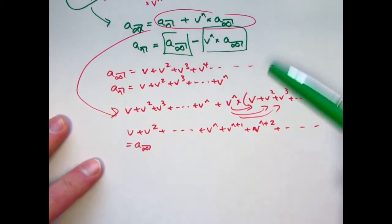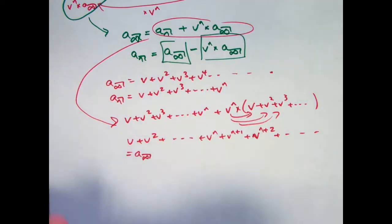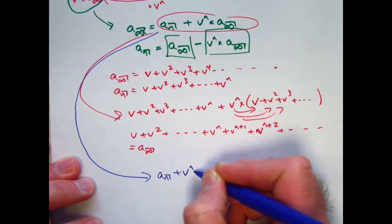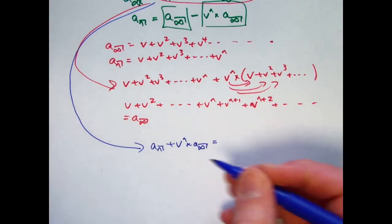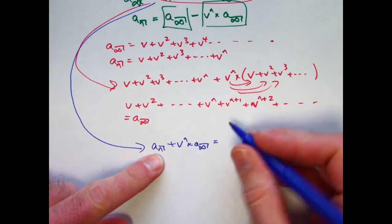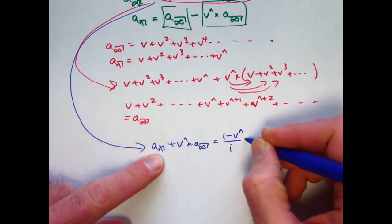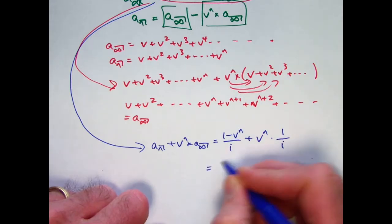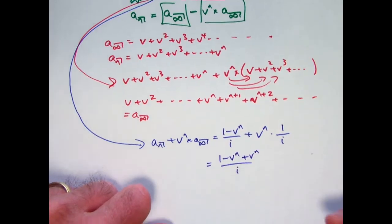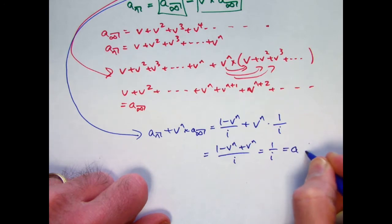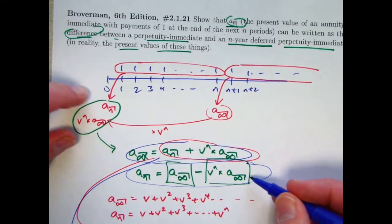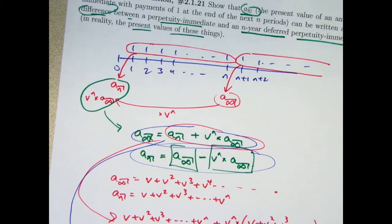This can also be derived algebraically using the simplified non-series formulas. Using a blue marker: a_n plus v^n times a_infinity. The non-series form gives a_n equals (1 minus v^n) over i, plus v^n times a_infinity. Since a_infinity equals 1 over i, we add them with a common denominator. The v^n terms cancel, leaving 1 over i, which is indeed a_infinity. That's a third confirmation of the fact that a_n equals a_infinity minus v^n times a_infinity — more practice with timelines, series, and other formulas.